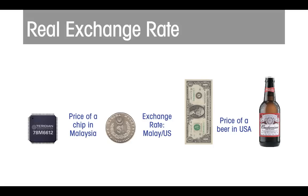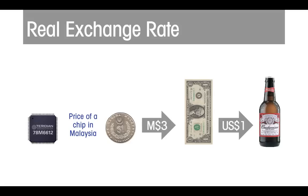To understand this better, let's put in some actual numbers. If you will forgive some rounding, in the United States a bottle or a can of Bud can be had for around $1. Currently, the quoted exchange rate for the ringgit is close to 3 per US dollar. And we'll use a price of 1.5 ringgits for a semiconductor chip, not far from the actual wholesale price for some types of chips.